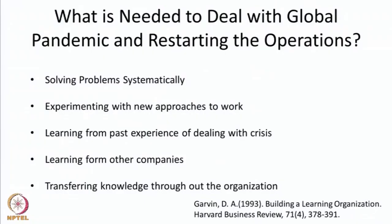Organizations also have to learn from other companies. In a given industry, there must be some organizations which would be able to restart their operations much earlier and much faster than others — organizations need to look at such examples and try to learn from them. These are very important points being identified by experts in the current times, but these are the same points which David Garvin talked about in 1993 in his famous article on building a learning organization.